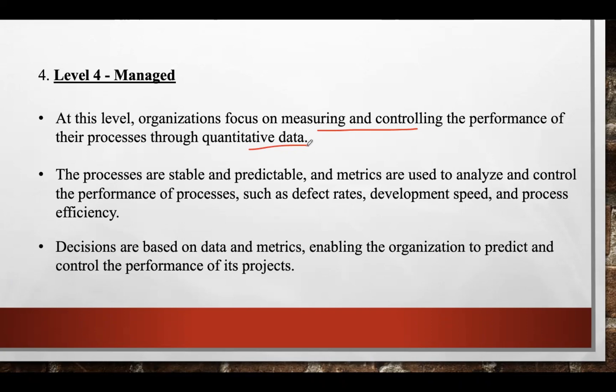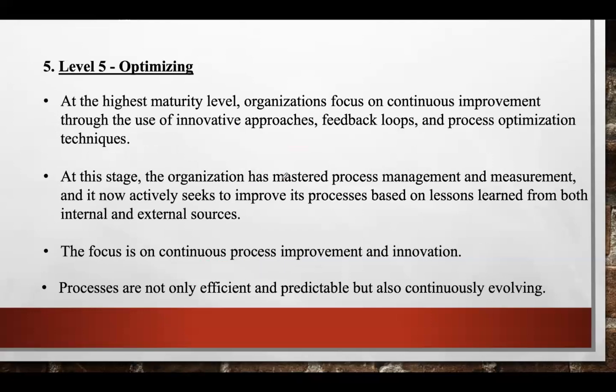In addition, to save more time, they introduced a commenting system on their website for employees to interact directly with customers and quickly identify defects in parts that need correction. This is level 4 — the Managed level — where they introduced a data system that identifies defects and which part of the factory they come from, increasing the success rate to 95%. Decisions are based on data and metrics, enabling the organization to predict and control the performance of its projects, with processes becoming completely stable and predictable.